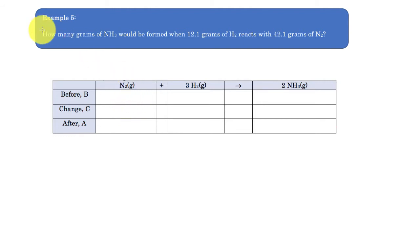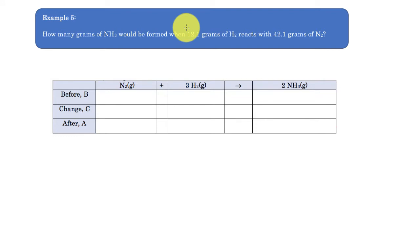The question we're going to look at today is: how many grams of ammonia would be formed when 12.1 grams of hydrogen reacts with 42.1 grams of nitrogen?